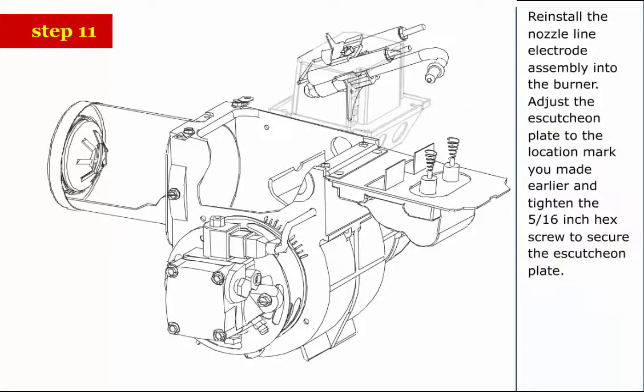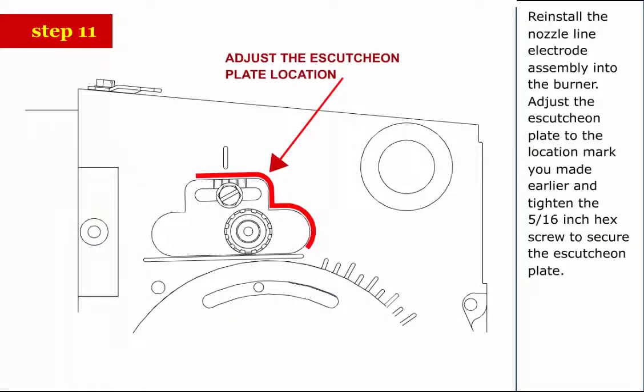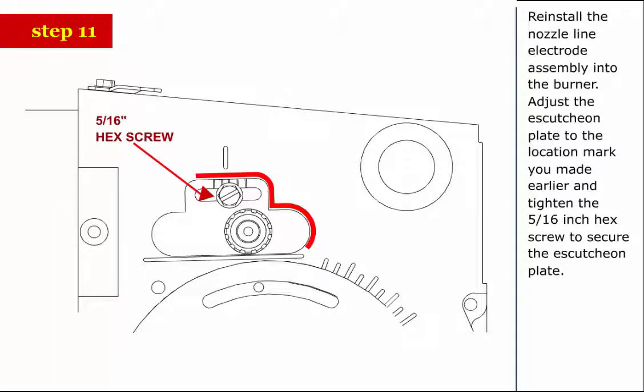Step 11: Reinstall the nozzle line electrode assembly into the burner. Adjust the escutcheon plate to the location mark you made earlier and tighten the 5/16 inch hex screw to secure the escutcheon plate.